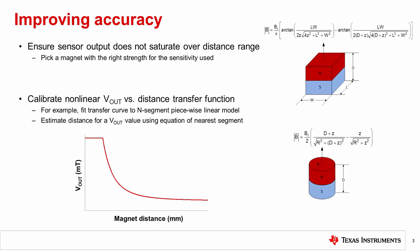As an example, the animation shows how the transfer function can be fitted to a piecewise linear model consisting of four segments derived from five points in the distance range of interest. The slope and intercept of each line can be stored in a calibration table and retrieved in real-time based on the sensor output voltage to calculate the corresponding magnet distance.